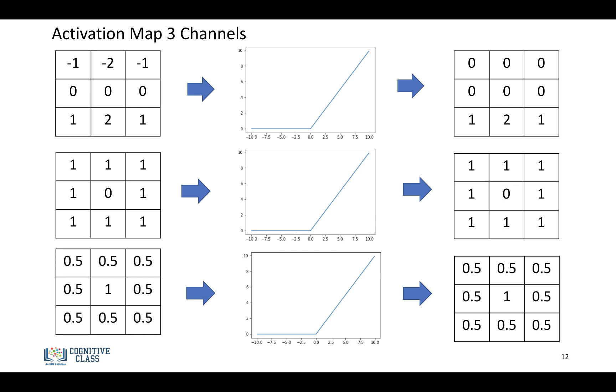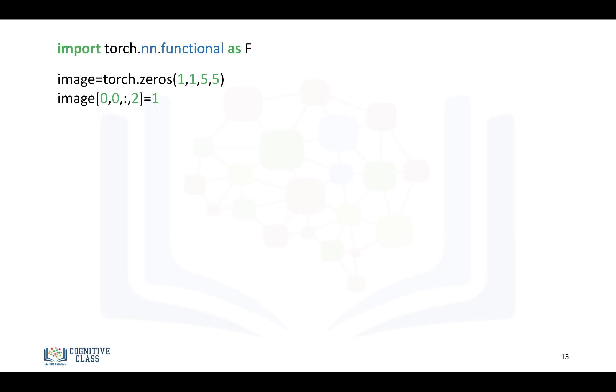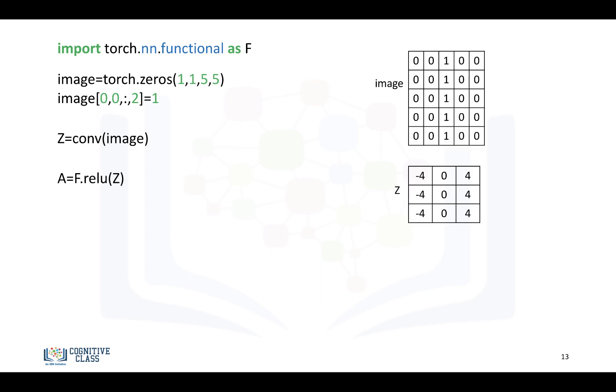And then for the other terms, because everything is positive, we get an identical output. So for convolution, it's just like neural networks. We'll create an image, perform convolution, and then we'll apply the activation function and store it in the tensor A.